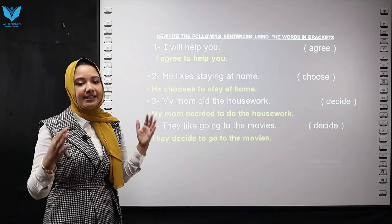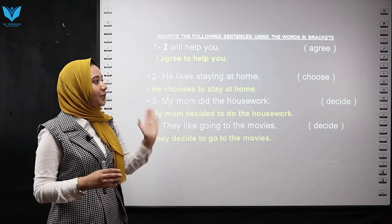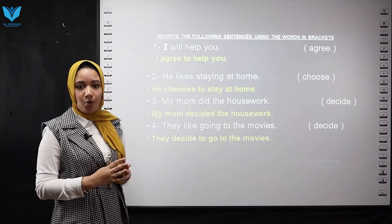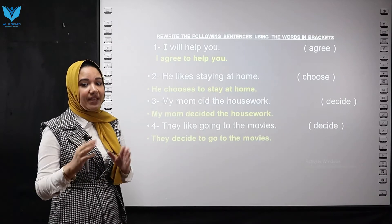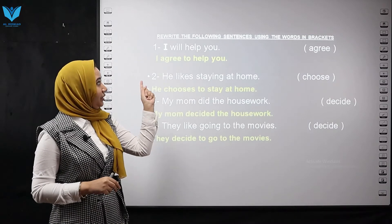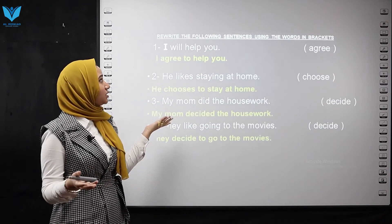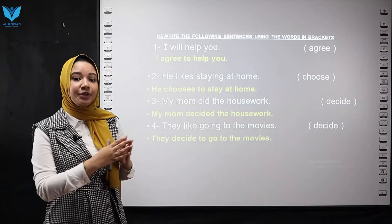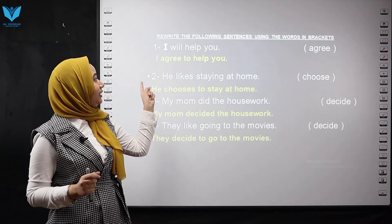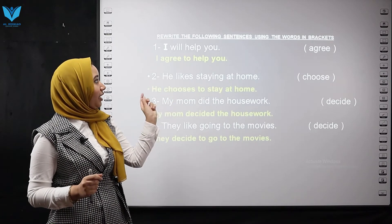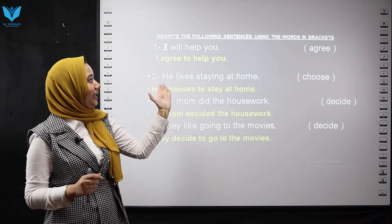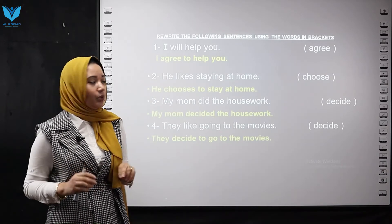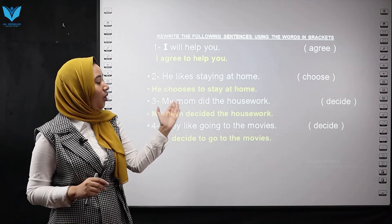The next question: Rewrite the following sentences using the words in brackets. Number one: I will help you — use 'agree.' After 'agree,' we put 'to' plus the base form. The main verb is 'help,' but 'will' is a modal verb, so I remove it. The answer is: I agree to help you.